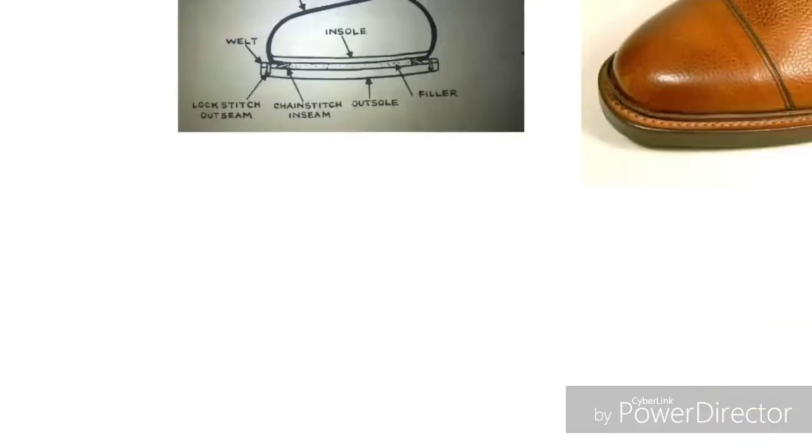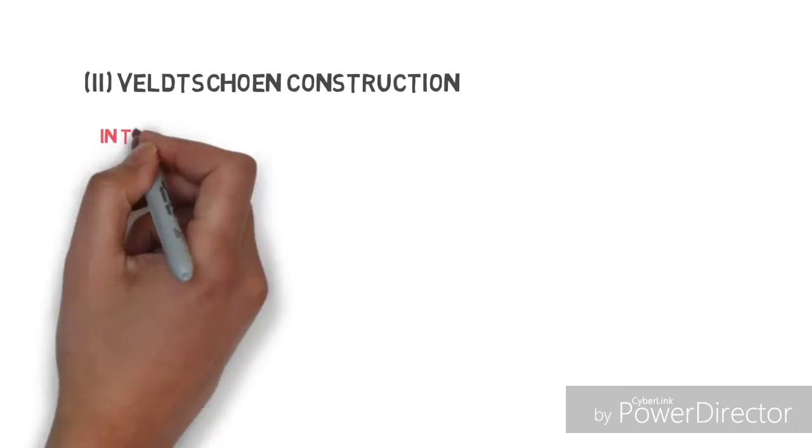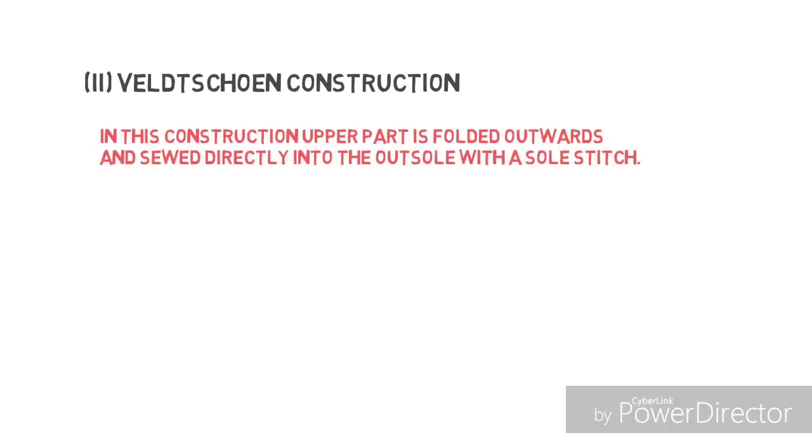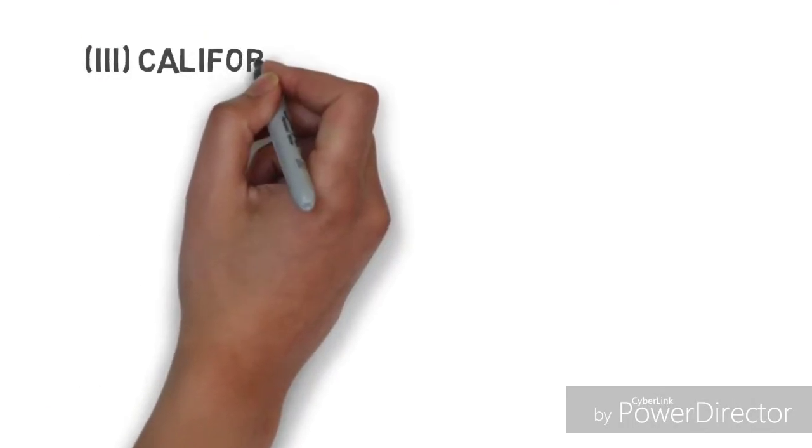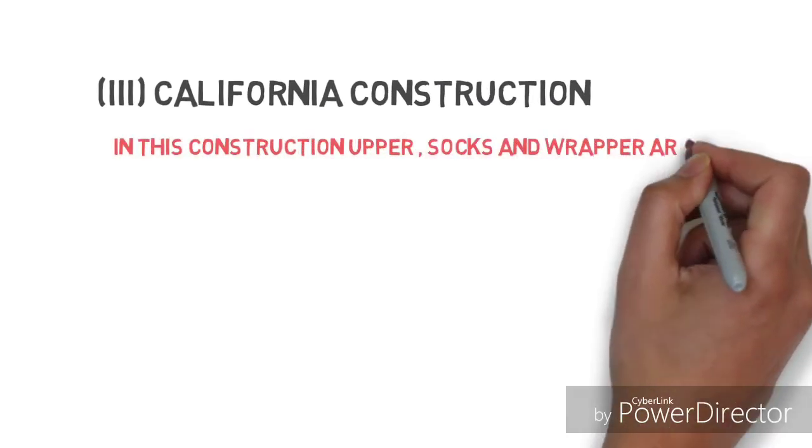Second one is well shown construction. In this construction, the upper part is folded outward and sewn directly into the outsole with sole stitch. Third one is California construction. In this construction, upper socks and wrapper are sewn together.